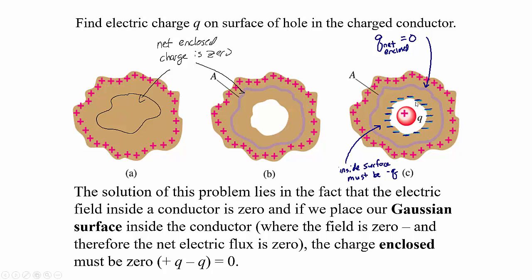Negative charge gets pulled to the inside surface, and we can actually figure out how much. This positive charge at the center of the cavity pulls negative charge onto the inside surface of the conductor. But with the Gaussian surface drawn inside the conductor, the electric field inside must still be zero, which means the net enclosed charge is zero. So the negative charge on this inside surface has to be negative q to balance the positive q in the hole. The electric field is zero, the flux is zero, and so the charge enclosed must be zero.